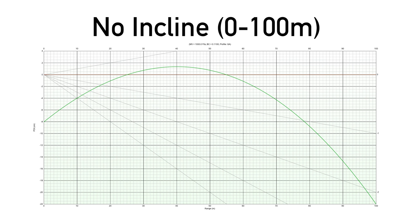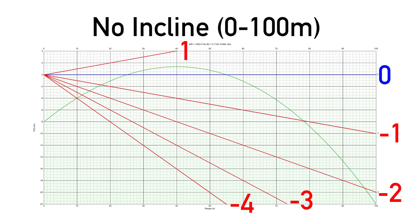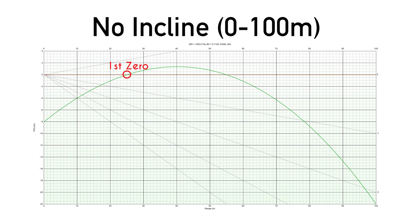The first graph shows what my trajectory is supposed to look like with no incline. The lines that flare out are the mils, or milliradians, as seen through the scope. First zero is at 25 meters, the peak of the trajectory is a little less than half a mil over center, second zero at 55 meters, and my point of impact at 100 meters is a little more than two mils under.